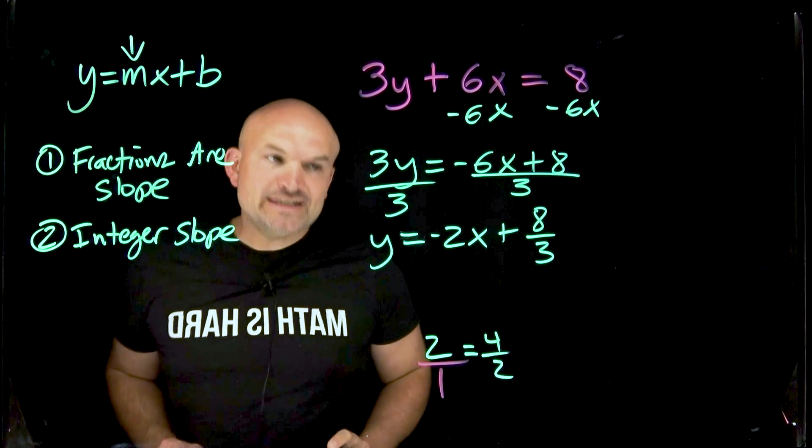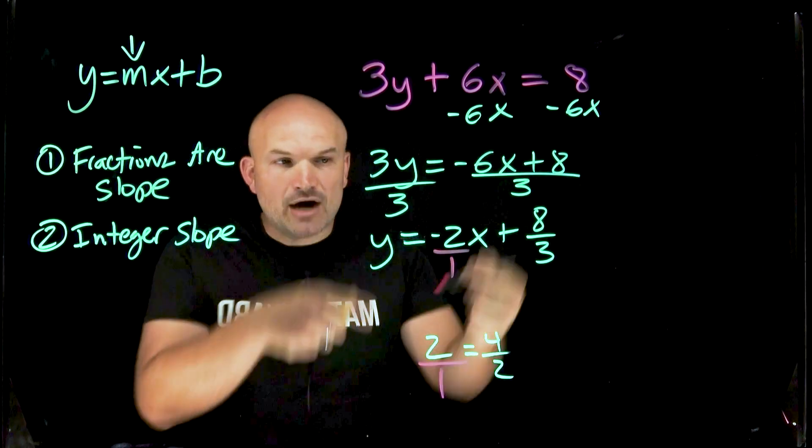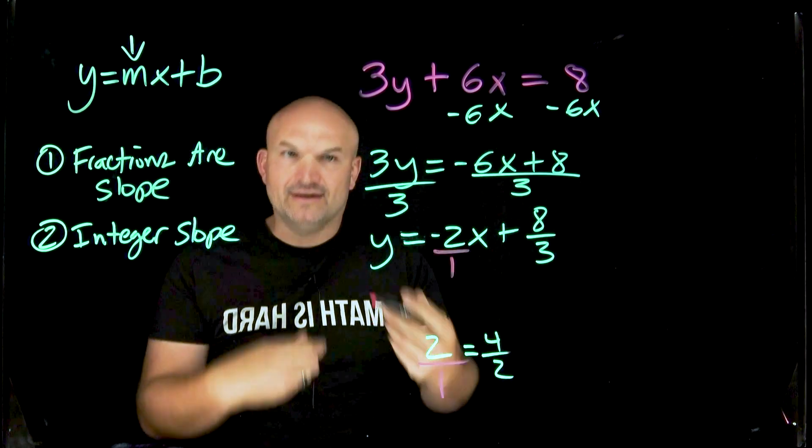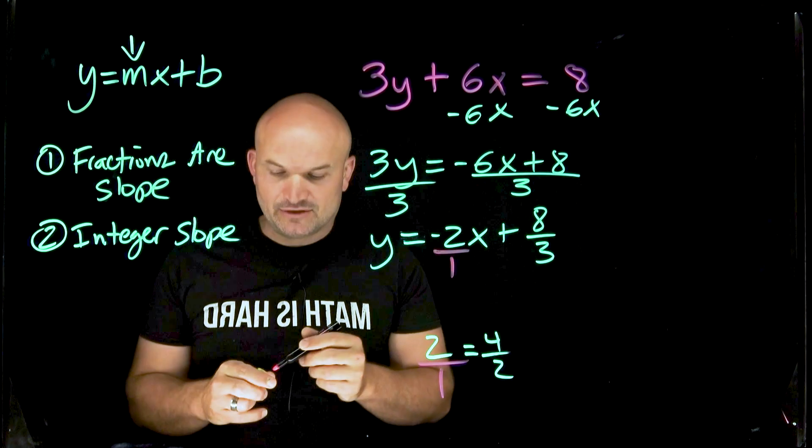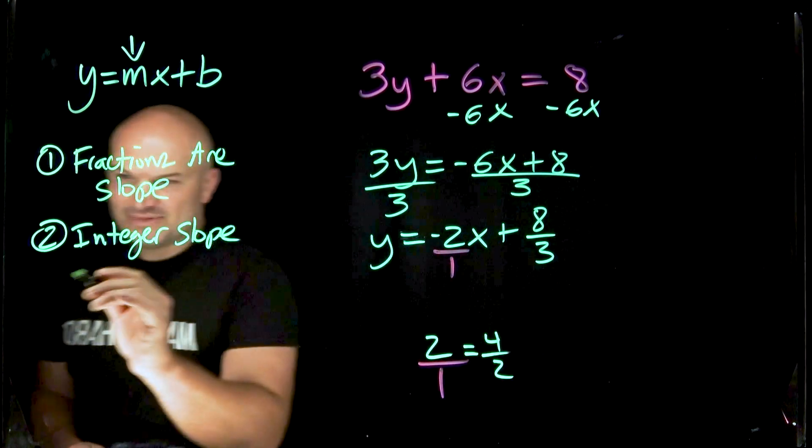So whenever you have an integer slope and there's no fraction, just put it over 1. Now you have your change in your y over your change in your x, you have the rise over the run. Now you can go and use that to be able to graph. But you guys can see the negative. And that is going to be our third mistake.